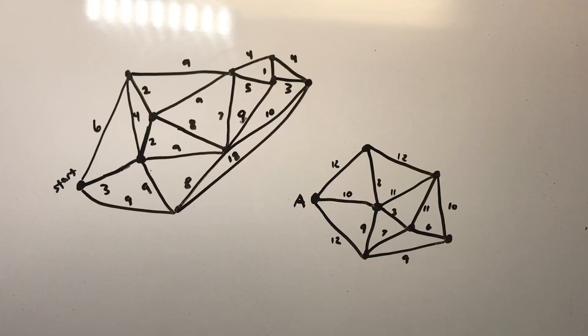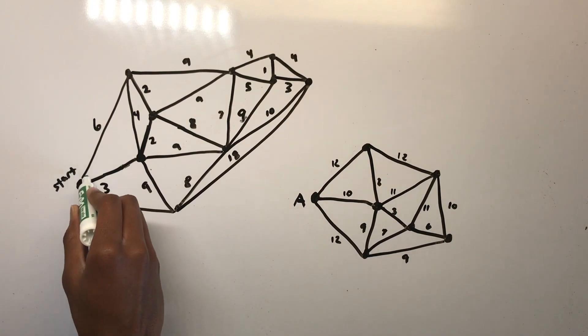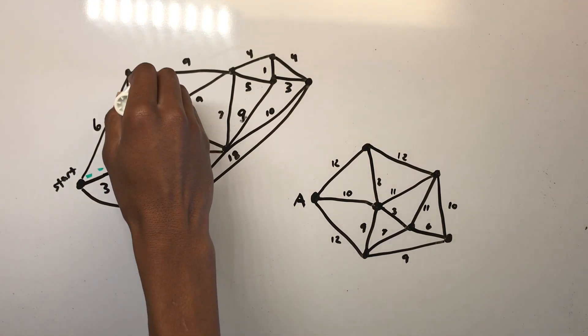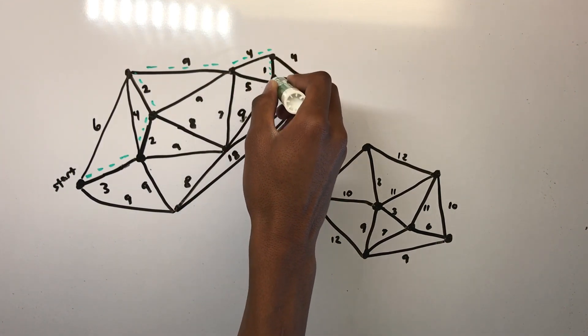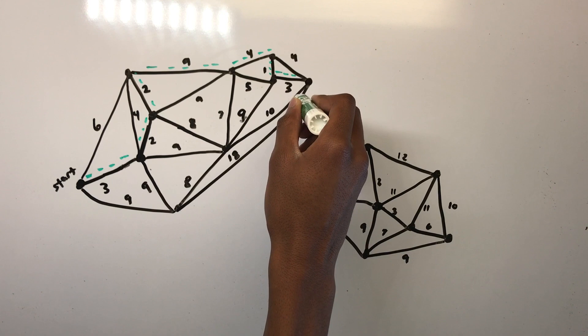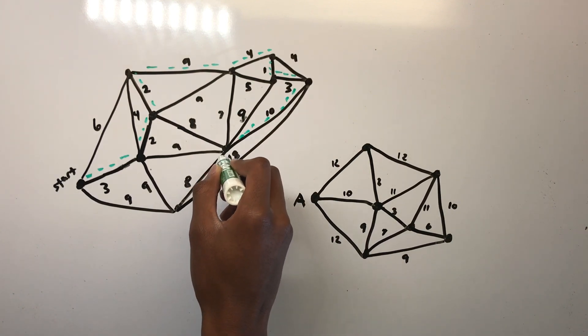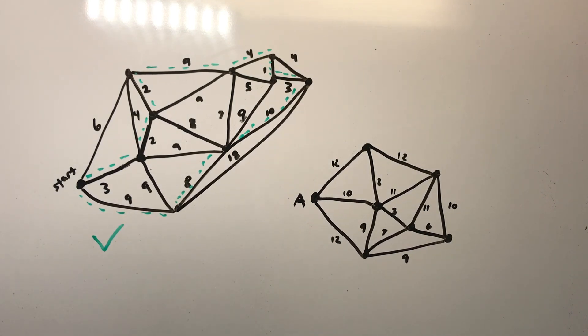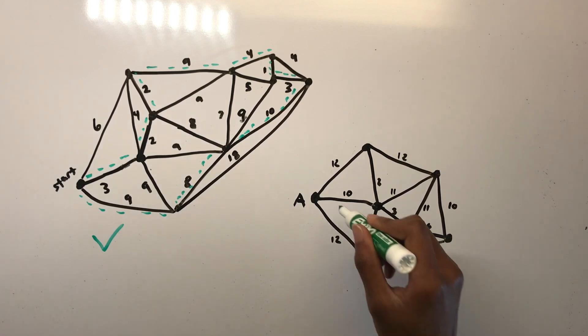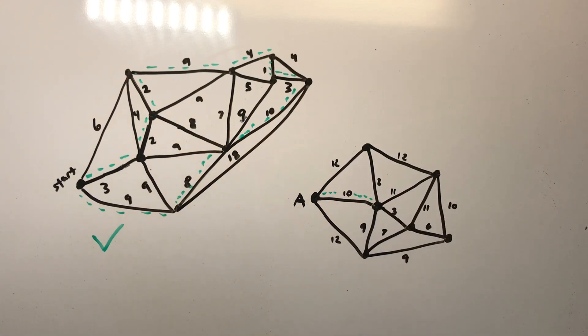Now, to return to the fact that the greedy algorithm may not work on a graph that isn't complete, let's look at two different graphs. Both of these graphs are not complete, but what's the difference between them? The difference is the fact that for the graph on the right, the greedy algorithm doesn't work. The greedy algorithm works perfectly fine with the graph on the left, as you can see here.